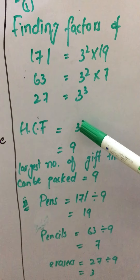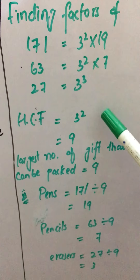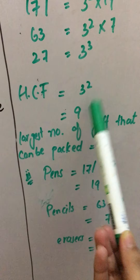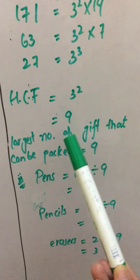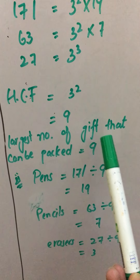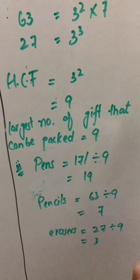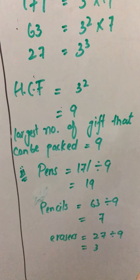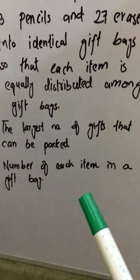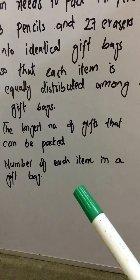We can write it as 3 to the power of 2, which is 3 × 3 = 9. So the largest number of gifts that can be packed is equal to 9. For the second part, we have to find the number of each item in a gift bag.